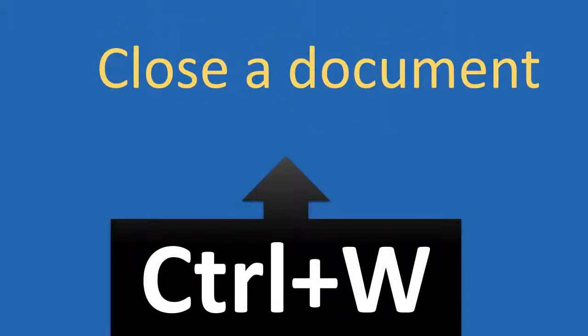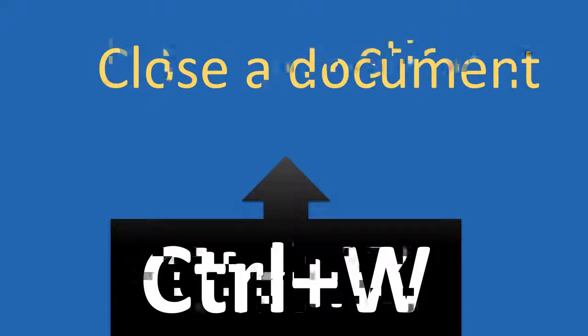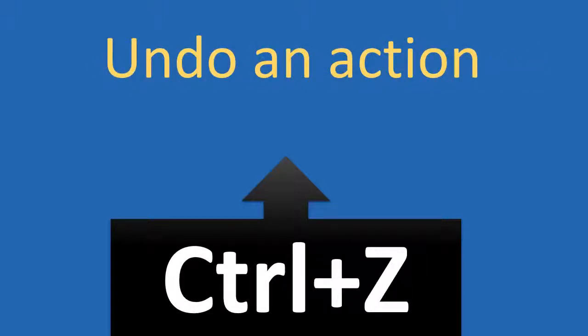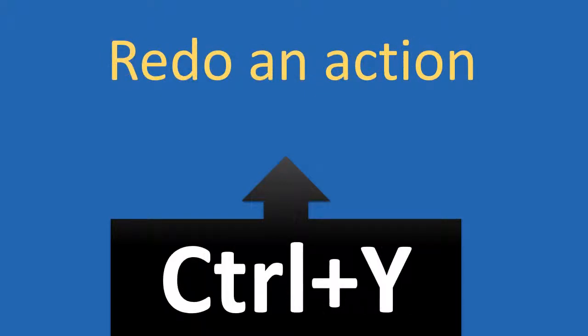CTRL plus W: used to close a document. CTRL plus Z: used to undo an action. CTRL plus Y: used to redo an action.